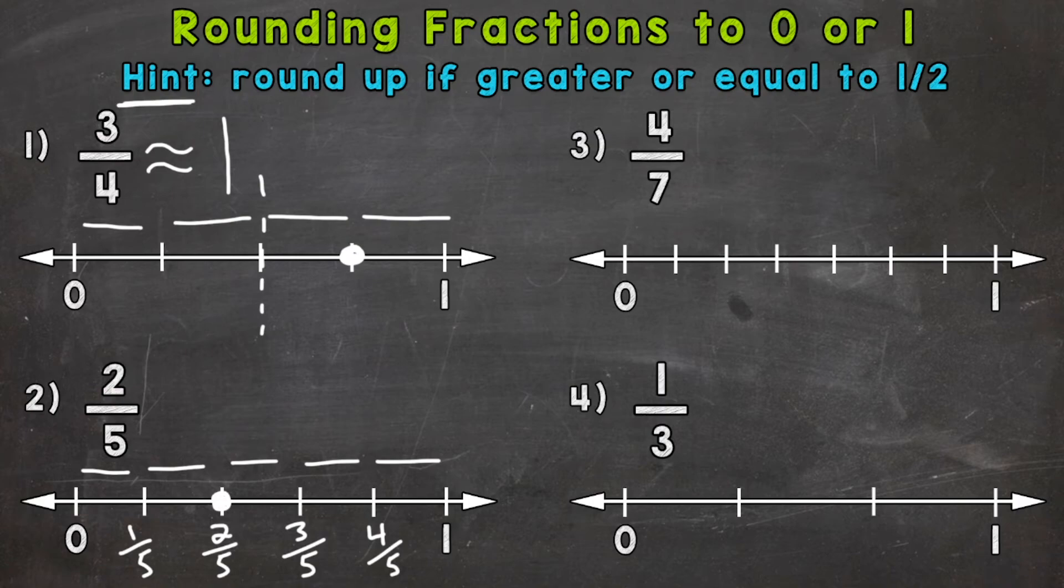Now 5 is an odd number, so we don't have a mark at the halfway point. It's going to be 2 and a half is half of 5. So the half would be right here. So we can tell that we are closer to 0. So 2 fifths is approximately, or rounds, to 0. And again, 2 fifths is less than a half, so it rounds to 0.